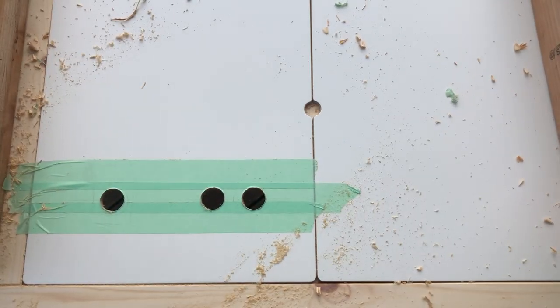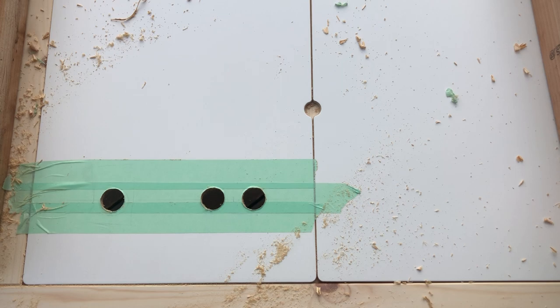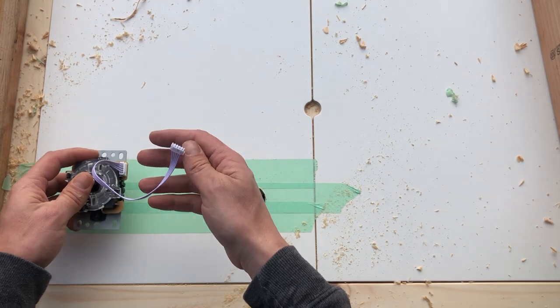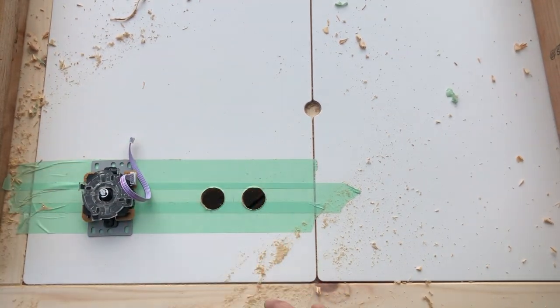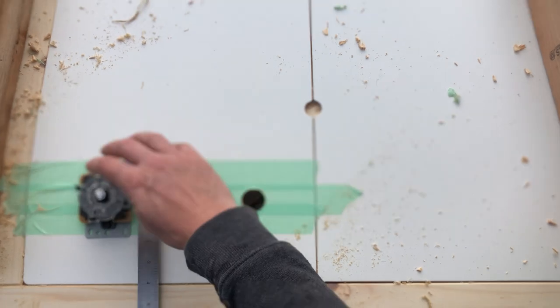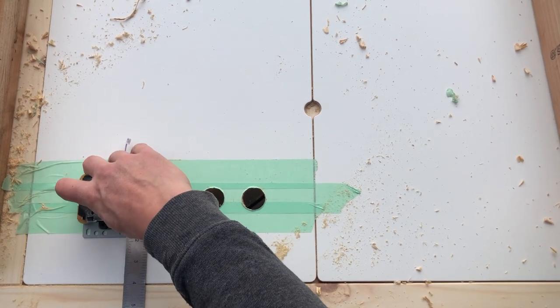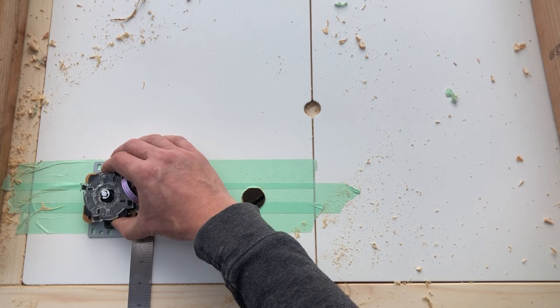Now the hole is done. We can grab the joystick and place it over the hole. I'm going to try to keep that joystick straight with respect to the table and center it in the hole.